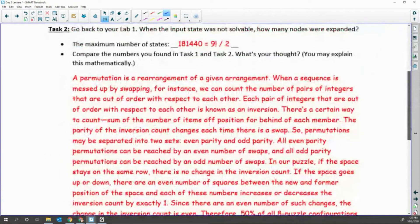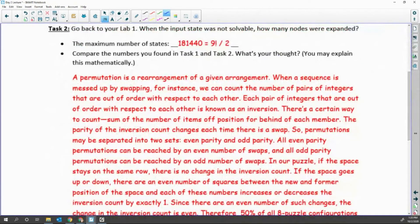Then you can think about why in Task 2. Because other states, half of other states, you will not be able to reach it. So maximum number of states when you have no solution, you should have 181,440 nodes in the explored. That number is when you cannot solve a puzzle.